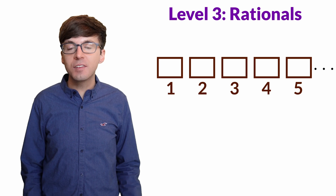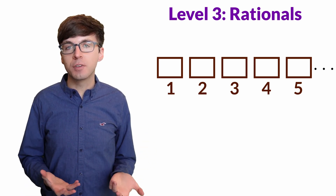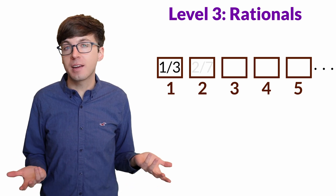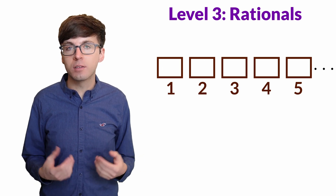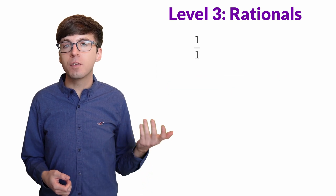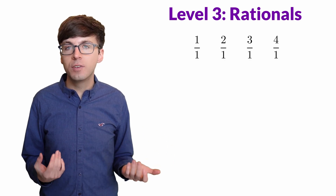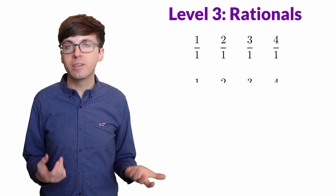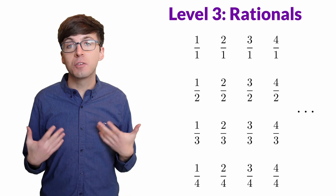For level three, let's consider the rational numbers and try to fit every rational number in hotel infinity. To start, let's think about the positive rationals and create a grid. In the upper left corner we put the fraction 1 over 1, and as we move left to right we increase the numerator by 1, and as we move top to bottom we increase the denominator by 1. Every positive fraction is in this grid somewhere.